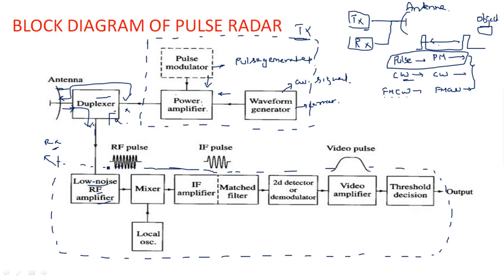The received echo signal strength is on the order of 10^-12 watts — a very very weak signal. This weak signal should not be affected by noisy components and must be amplified immediately. Therefore the first component in the receiver is a low-noise RF amplifier, which amplifies without introducing additional noise. This RF signal is then given to a mixer — a device which mixes the local oscillator signal frequency with the received signal frequency, producing an intermediate frequency (IF) signal, converting the RF signal to an IF signal.